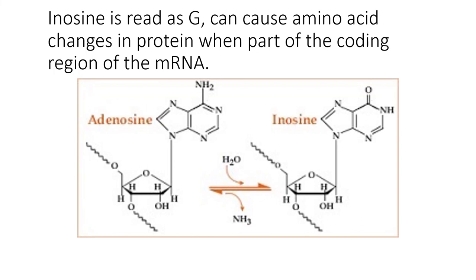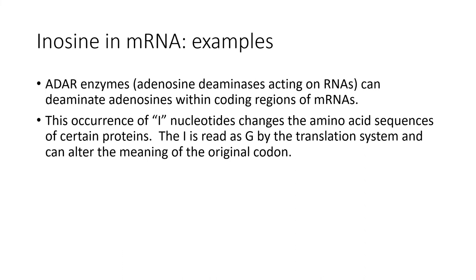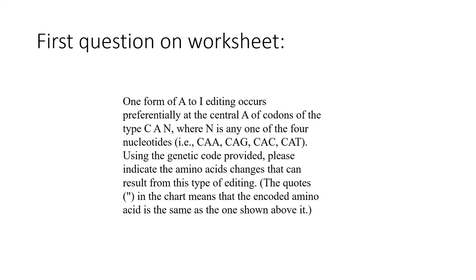Inosine is read as G, and this can cause amino acid changes in proteins when the editing occurs in coding regions — changing the mRNA sequence potentially changes the amino acids translated from those mRNAs. For a worksheet example: consider codons CAA, CAG, CAC, and CAT. Editing the central A to inosine (read as G) converts these: CAT becomes essentially CGT, CAC becomes CGC — both now encoding arginine. Similarly, glutamine codons CAA and CAG become arginine codons. Histidine and glutamine in the original protein become arginine as a result of that editing event.